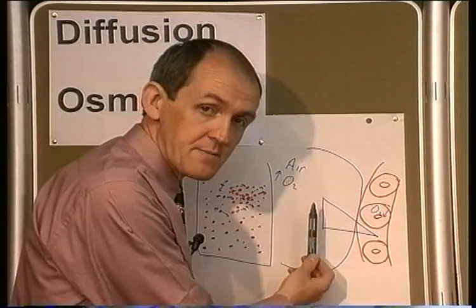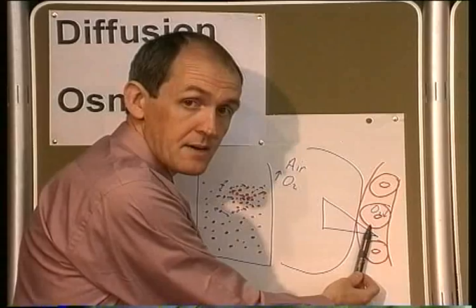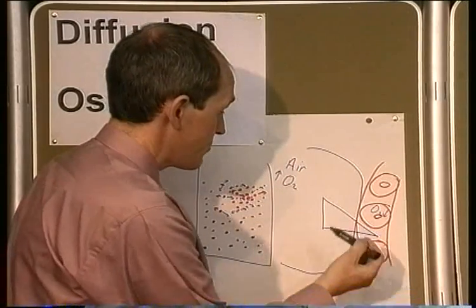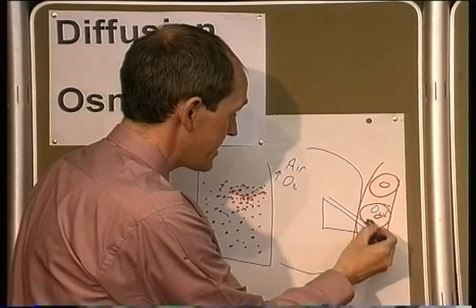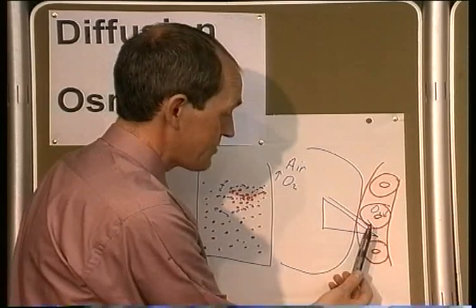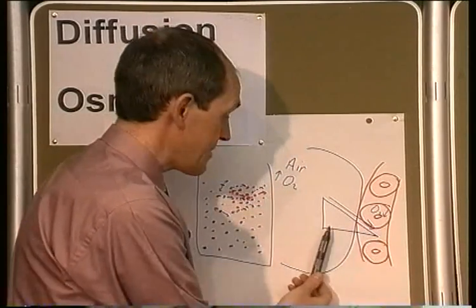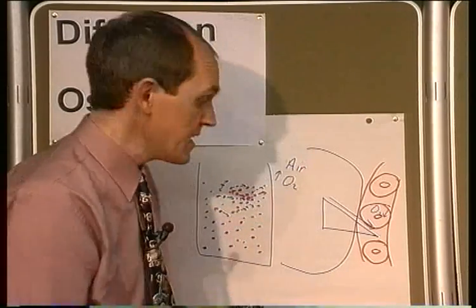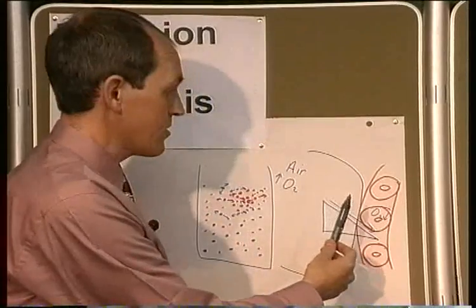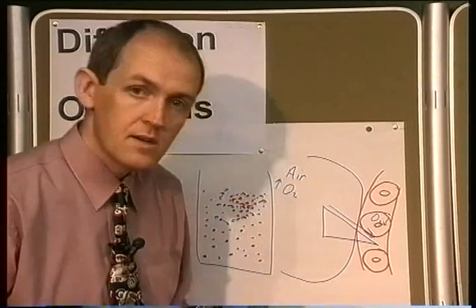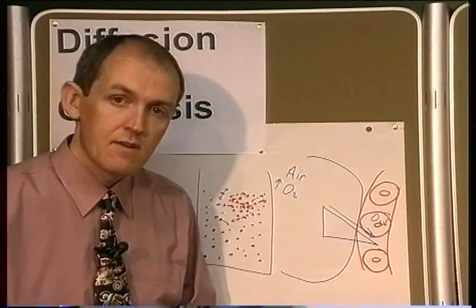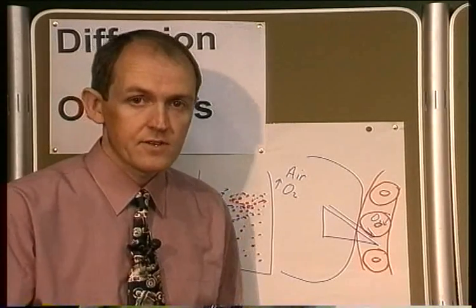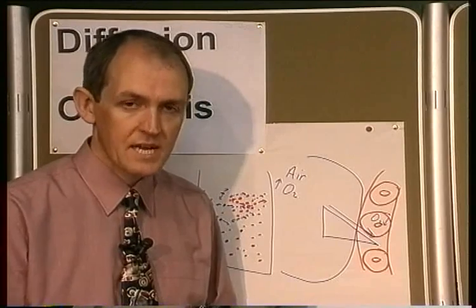There's a diffusion gradient between the alveoli and the capillary. Oxygen will tend to move down the diffusion gradient to try and make the amount of oxygen equal on both sides. The net result is that oxygen will diffuse from the alveoli into the blood, where it can be carried back by the pulmonary venous circulation to the left atrium, where it can be pumped around the body.